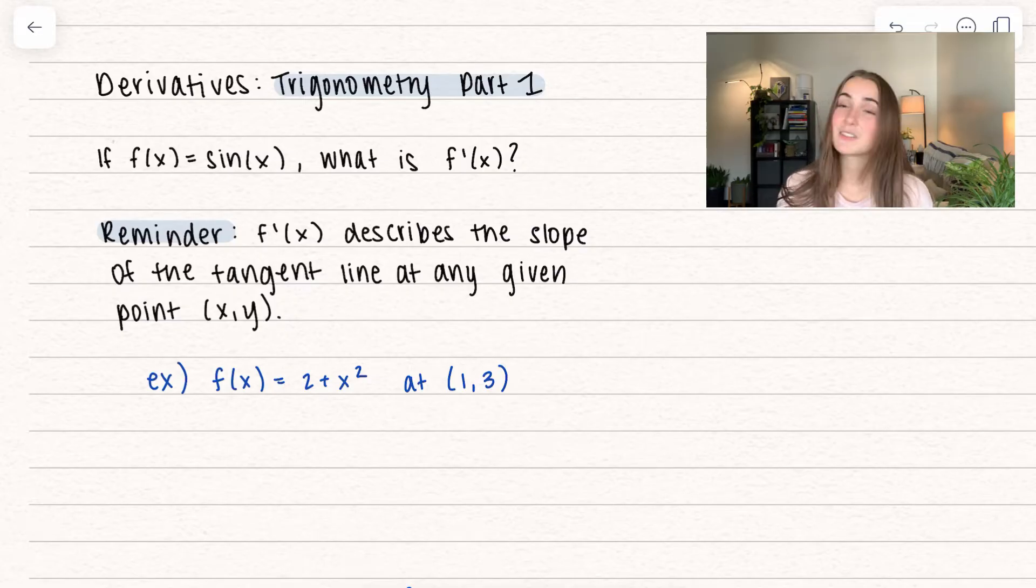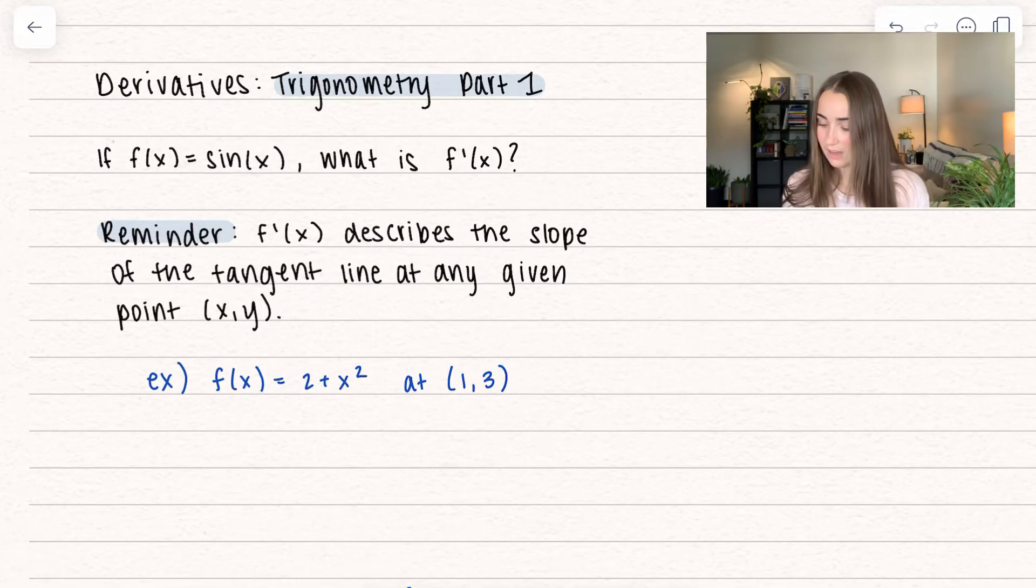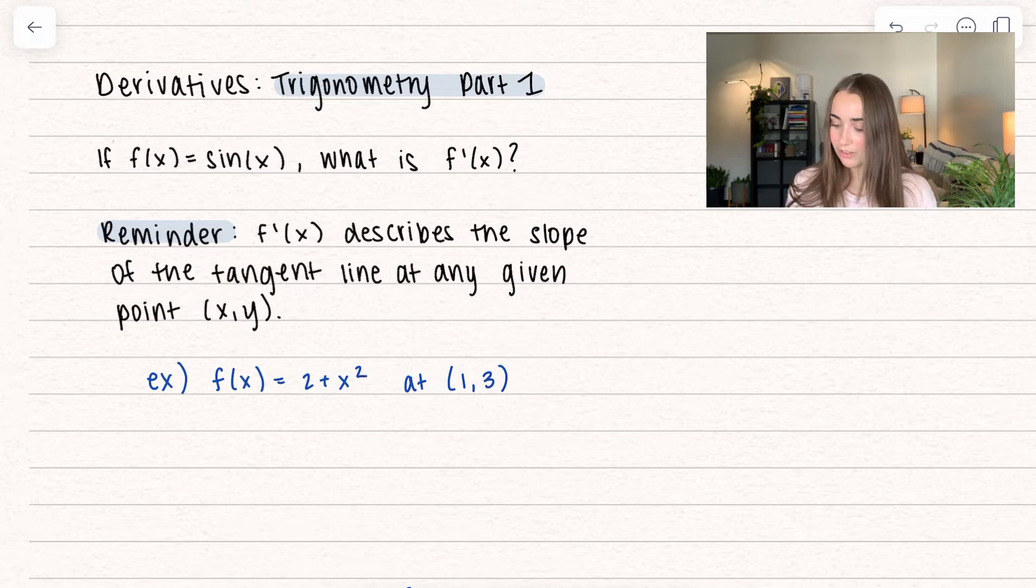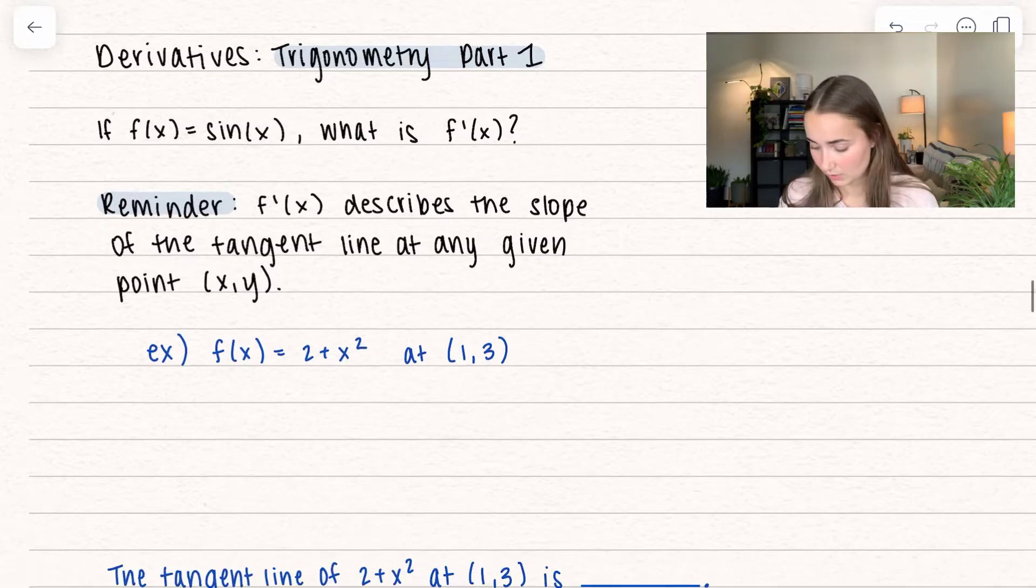If f of x equals sine of x, what is the derivative of sine of x? I have a little reminder on what derivatives even mean. Derivatives describe the slope of the tangent line at any given point (x, y). I have a mini example of this so we can see what it looks like.